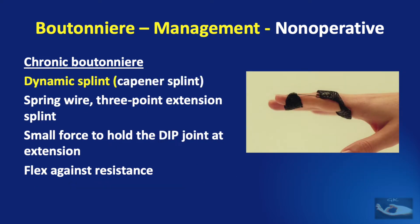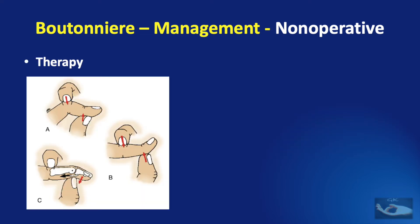The dynamic splint, otherwise known as the Capner splint, is a spring wire 3-point extension splint which has a small force to hold the DIP joint in extension. The patient has to flex the distal interphalangeal joint against resistance. Apart from the splints, therapy is also very important for correction of the Boutonniere deformity.